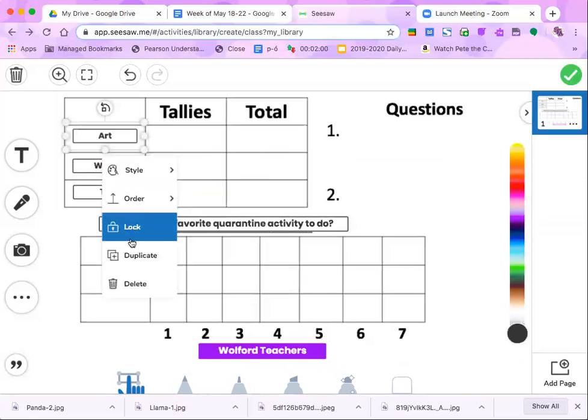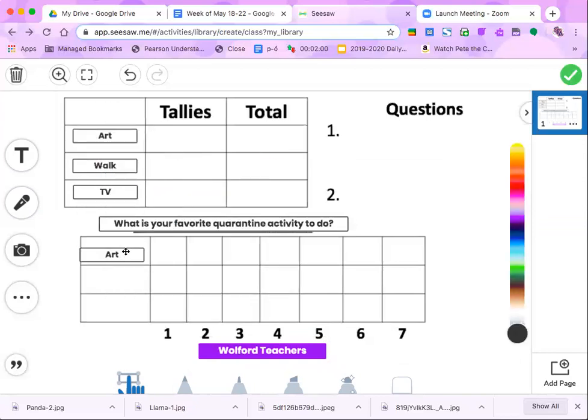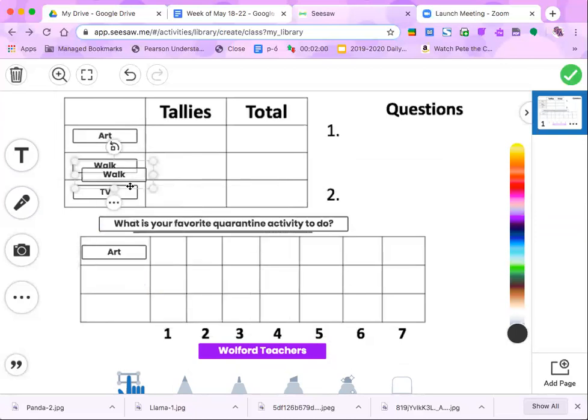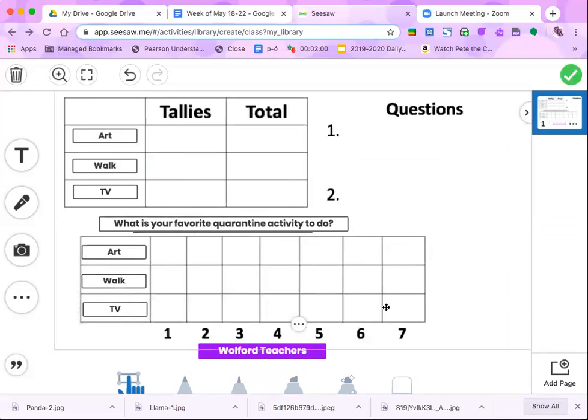So I asked Wolford teachers. And I'm going to duplicate these titles and bring them down here for my graph because we need to have titles for our graph. And I did already give you the numbers for the data here. I already organized that for you.